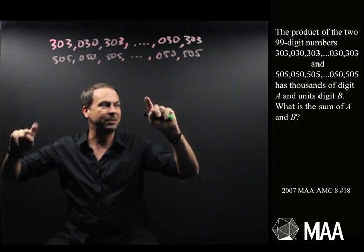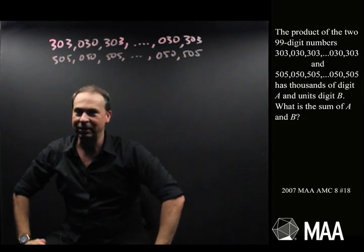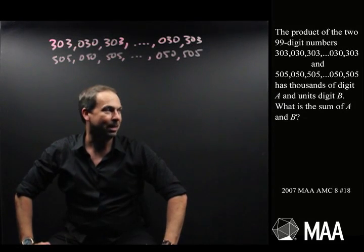So the product of the two 99-digit numbers has thousands digit A and units digit B. What is the sum of A and B?